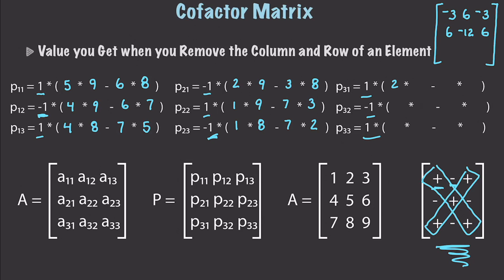Then: 2×6 minus 3×5, giving negative 3. Then 1×6 minus 4×3, giving 6. And finally 1×5 minus 4×2, giving negative 3. Let me double-check my work to make sure I did it all right — and it looks like I did.